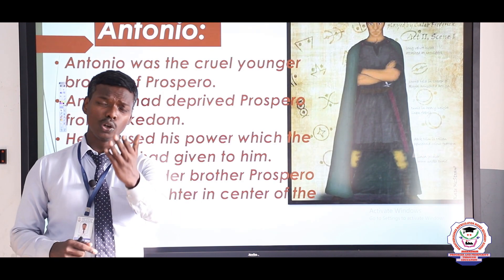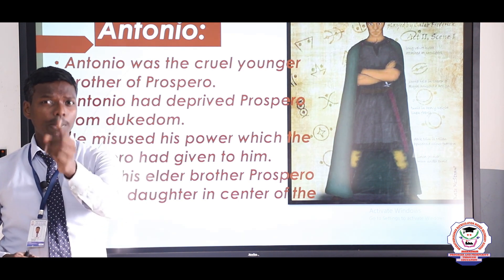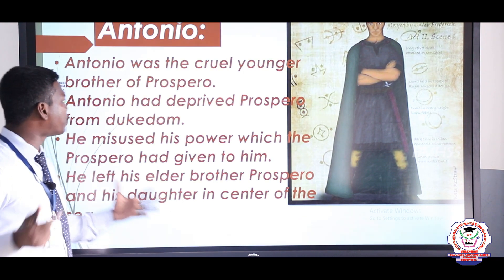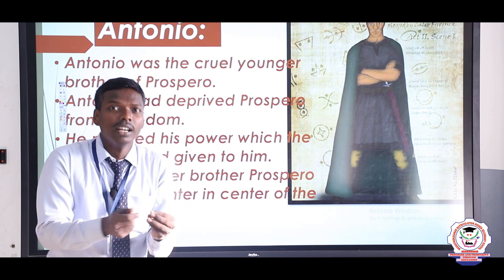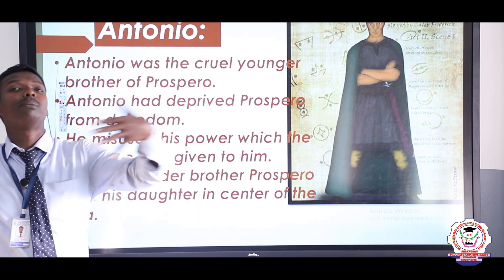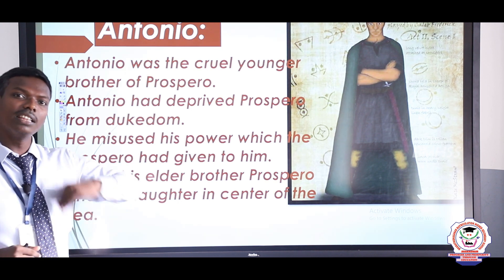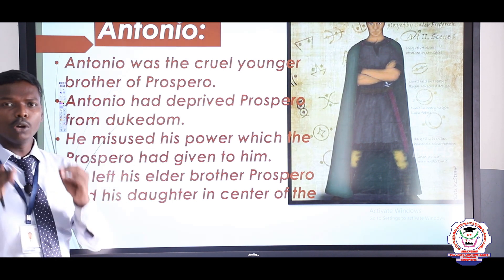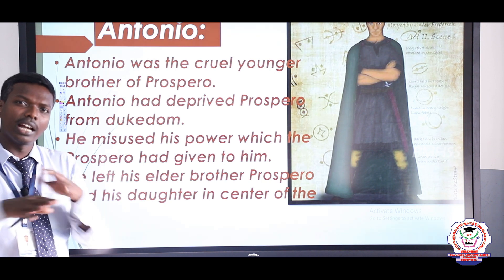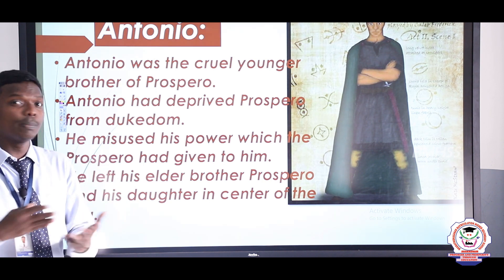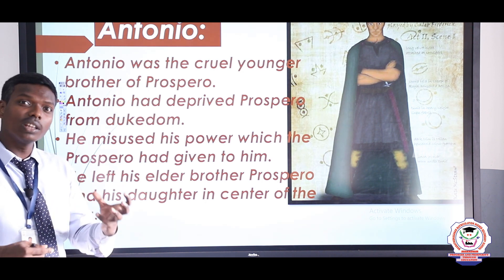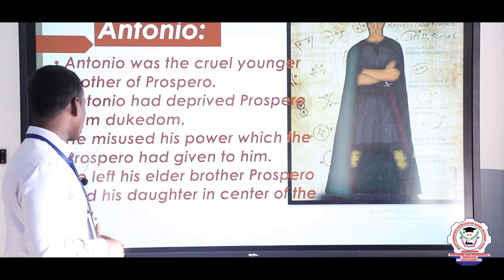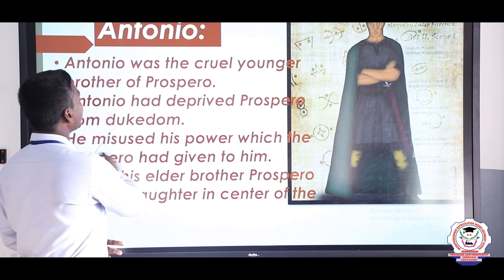Antonio was the only brother of Prospero and a cruel younger brother. Antonio had deprived Prospero of his dukedom — he usurped it. He misused the power which Prospero had given to him. Together with Alonso, King of Naples, he plotted against Prospero and left Prospero and his daughter Miranda in the center of the sea.